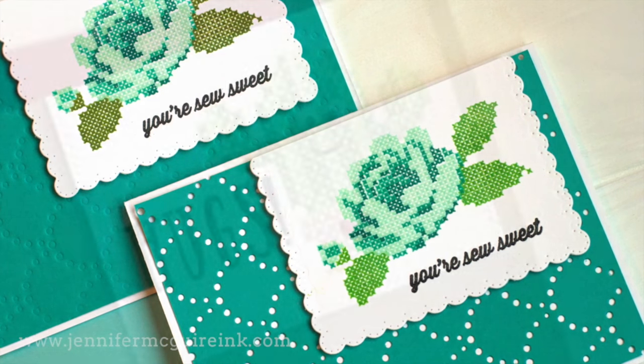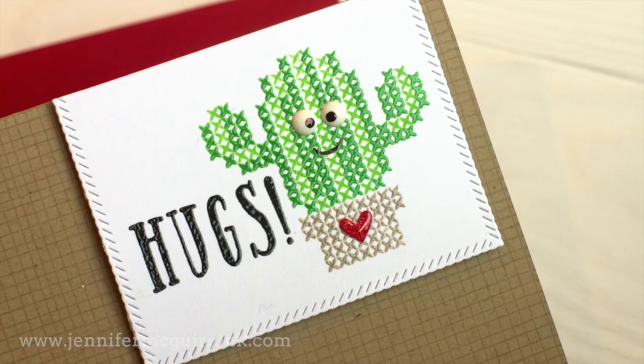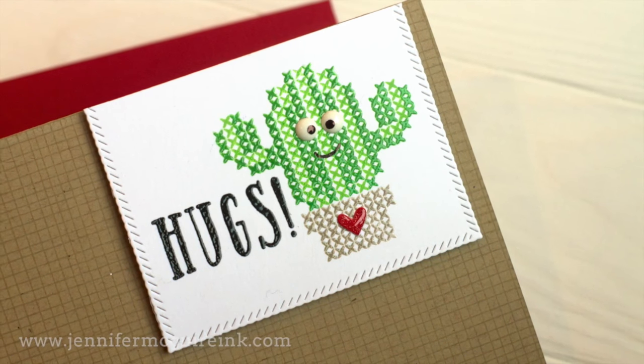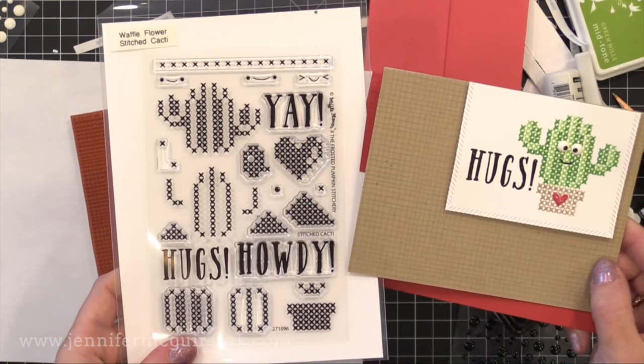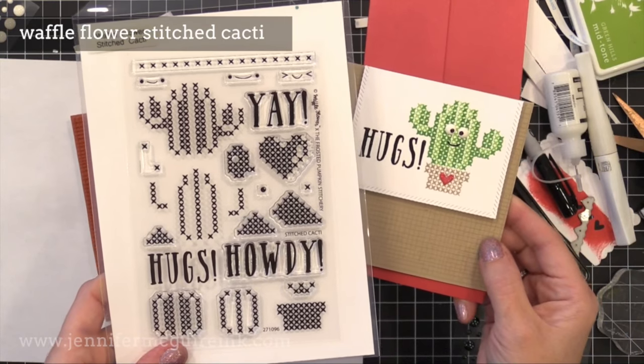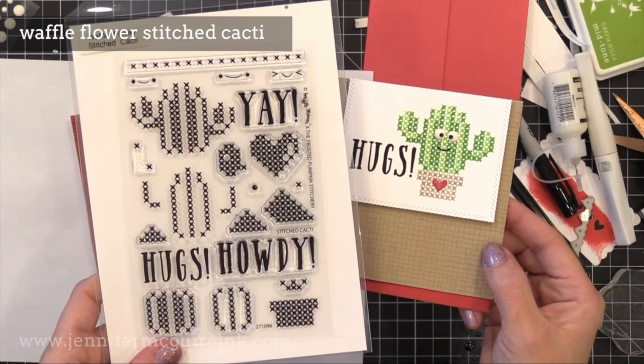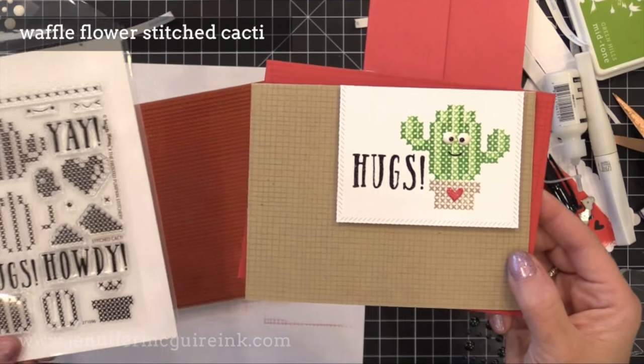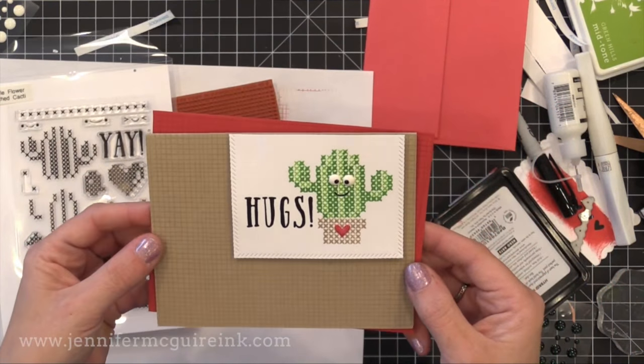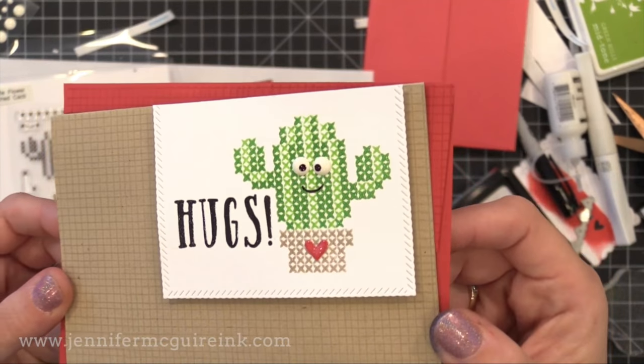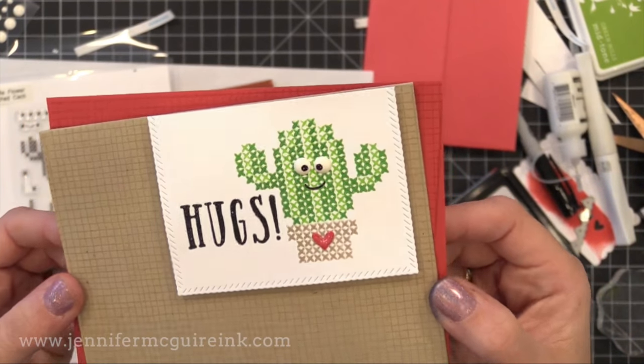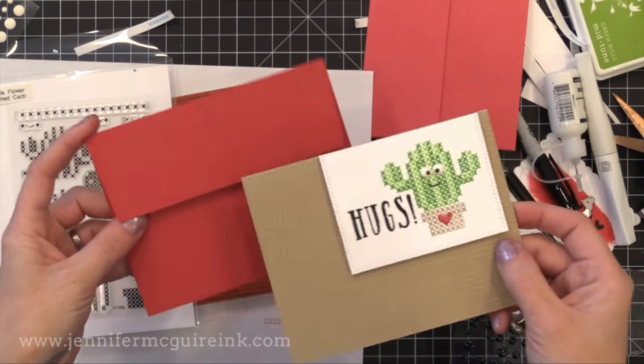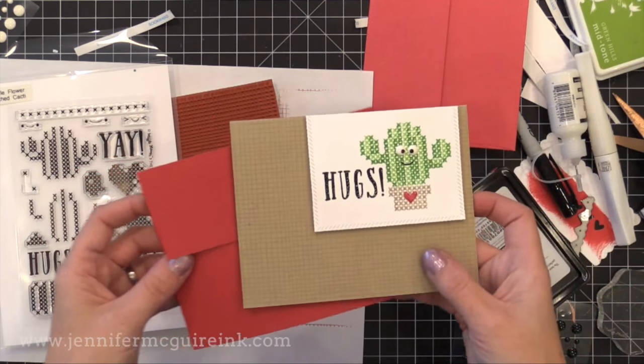Before we go, I just wanted to show you one more quick example. This uses a Waffle Flower Cross Stitch Cacti Stamp Set. Same techniques of layering, but this time I have a more playful card. And I actually only embossed the dark green, but not the light green. It's fun to emboss some and not emboss some of your stamping for a nice mix. The Little Cactus is stamped on a square die cut that I created using a Cat Scrappiness Rope Square Die. And the background I stamped a My Favorite Things background stamp. And I put that on my envelope too.